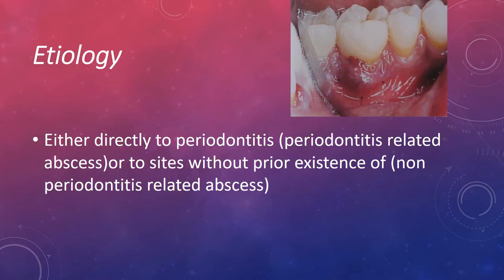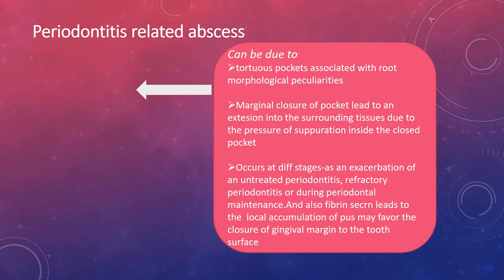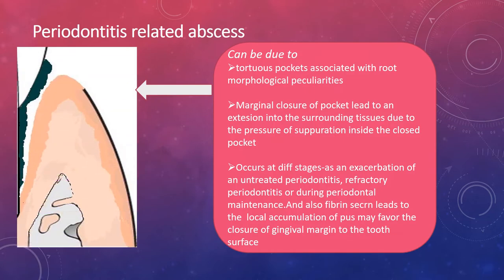Coming to the etiology, it can be due to periodontitis — that is, periodontitis-related abscess — or due to sites without prior existence of periodontitis, that is, non-periodontitis-related abscesses. For periodontitis-related abscesses, one reason is tortuous pockets with root morphological peculiarities. If it is a tortuous pocket with complex root morphology, the opening will be very minimal, which can lead to abscess formation.